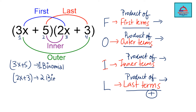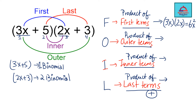Whenever you are taking the product of two binomials, this method helps you. F stands for the product of the first terms, so 3x will be multiplied with 2x — these are the first terms: the first term of the first binomial and the first term of the second binomial. So 3x multiplied with 2x gives you 6x².